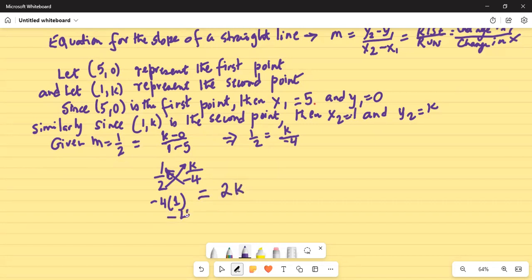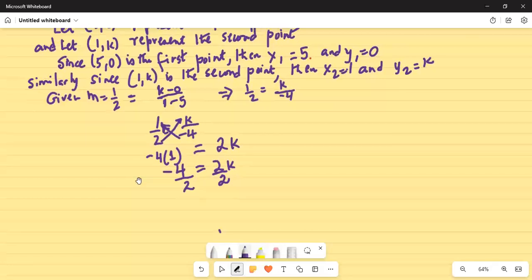Now, minus 4 times 1 is minus 4 equals 2k. Now we have to remove this 2 multiplied by k. We do the opposite thing, we divide by 2 to get rid of the 2. So minus 4 divided by 2 is minus 2 equals 2 divided by 2. They cancel out is k. So the answer is k equals minus 2.